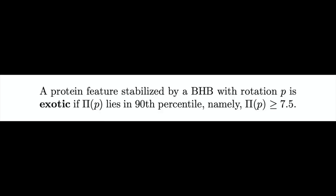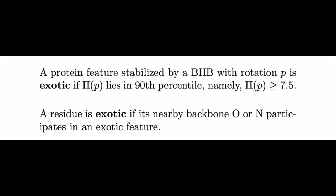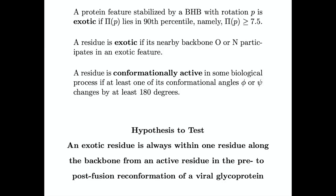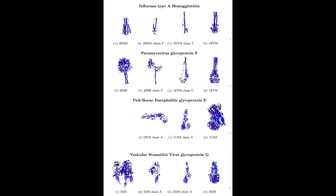Viral glycoproteins, because of their typical tectonic reconformation from pre- to post-fusion, thus provide a natural laboratory to test and then exploit the hypothesis that exotic protein features have functional consequence. More precisely, a protein feature is exotic if the BHB stabilizing it lies in the 90th percentile of pi values. A residue itself is exotic if at least one of its adjacent backbone oxygen or nitrogen atoms participates in an exotic feature. And finally, a residue is conformationally active if at least one of its conformational angles changes by at least 180 degrees. Then the precise hypothesis to be tested is that an exotic residue lies within one residue along the backbone of a conformationally active one in the transition from pre- to post-fusion conformations.